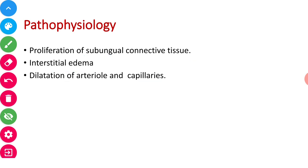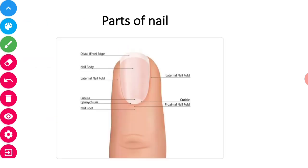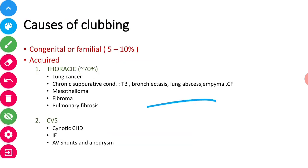Next is the causes of clubbing. Clubbing can be congenital or acquired. Mainly acquired - we have just five to ten percent are congenital, others are acquired. In acquired, three systems are mostly involved. Thoracic 70% are involved, besides that cardiovascular and GIT. These three systems are most commonly responsible for clubbing.